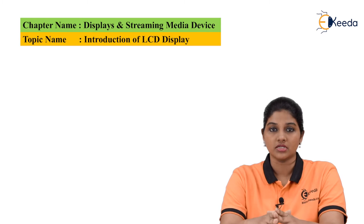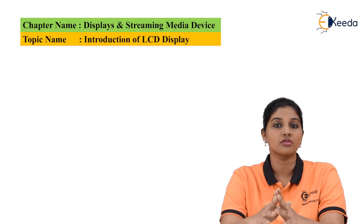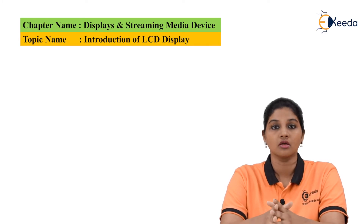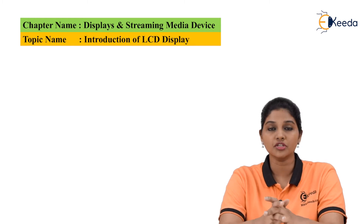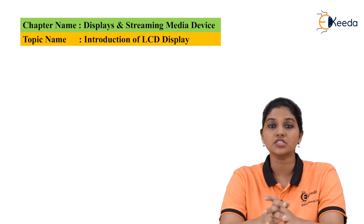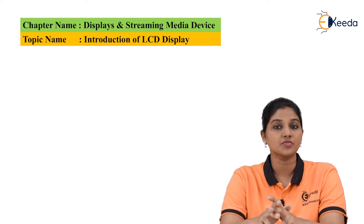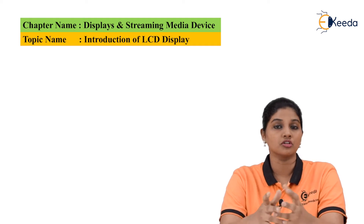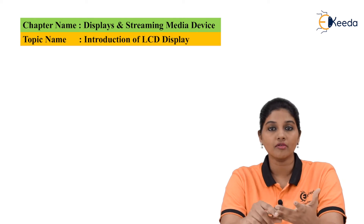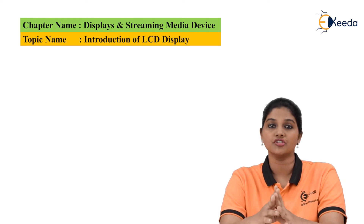Display is an output device. It is used to produce the result of a certain operation. The operation can be of any form. In this video we are going to specifically talk about the TV display or the displays which are used in various devices which includes mobile devices, computer devices, and specifically the television device.